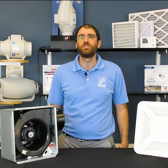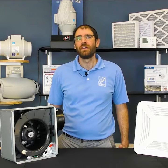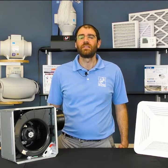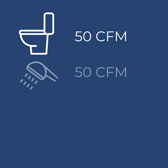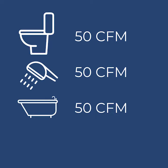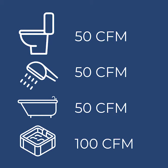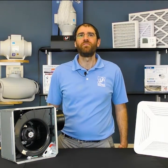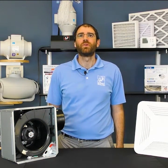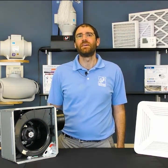If your bathroom is over 100 square feet, the CFM needed is calculated based on the fixtures in the bathroom. For example, a toilet requires 50 CFM, a shower 50 CFM, a bathtub 50 CFM, and a jetted tub requires 100 CFM. Add the CFM of all the fixtures within the bathroom for the required fan CFM.